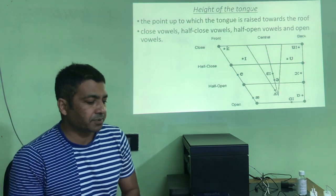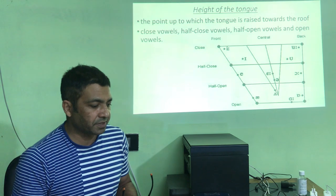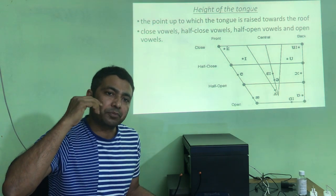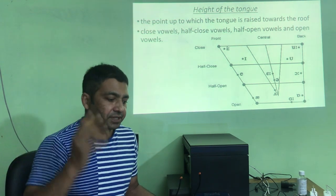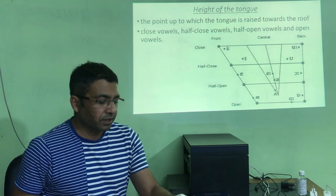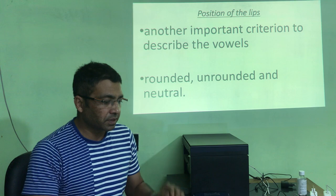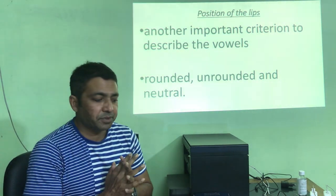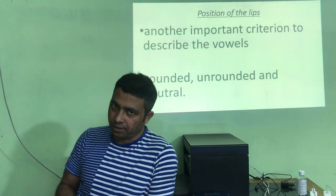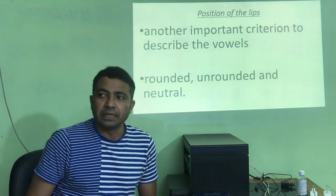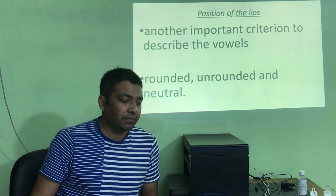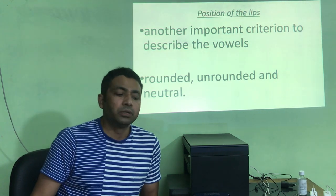Now, the height of the tongue during pronunciation: all the vowels are positioned in the chart according to their height — close, half-close, half-open, and open. You also need to mention the position of the lips during vowel pronunciation. The lip position may be rounded, unrounded, or neutral. For example, when you say /e/ it remains neutral; for long /iː/ it may be unrounded; but when you say /ɔː/ or /uː/, the lips are rounded.